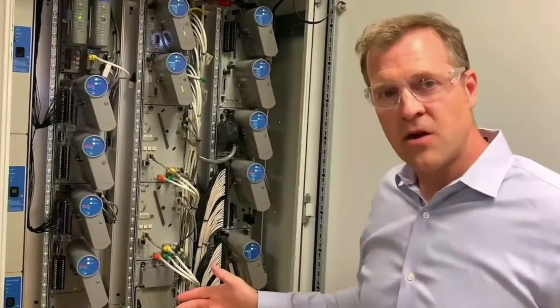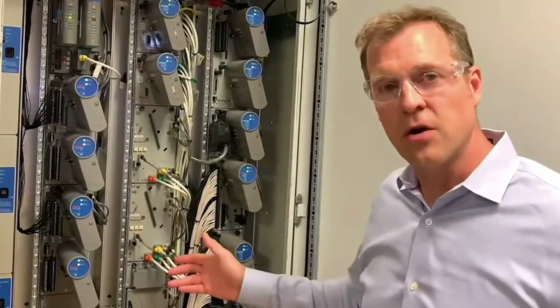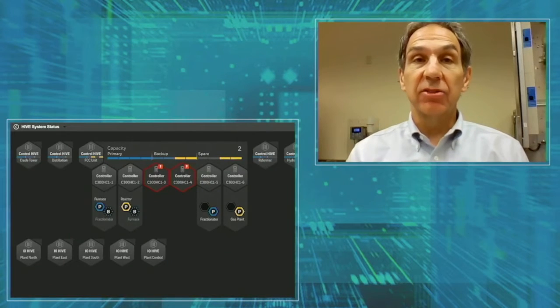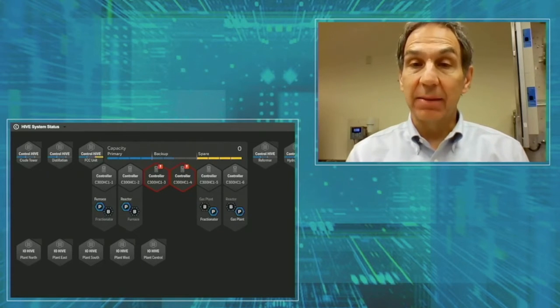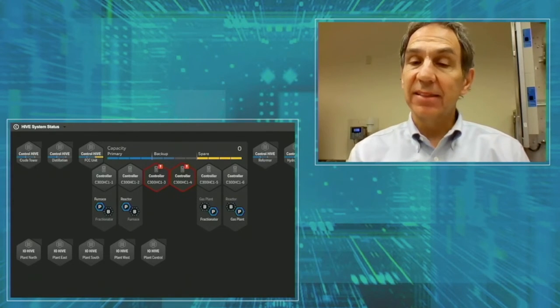No impact to the equipment, no impact to the I/O, and no loss of control. The second incident really illustrates the robustness of the Control Hive. After the second failure, the gas plant control seamlessly fails over, and then backups for the gas plant and reactor CEs are reestablished. At this point, the Control Hive has lost one-third of its compute power and remains completely solid, and is even capable of withstanding yet another bad event.